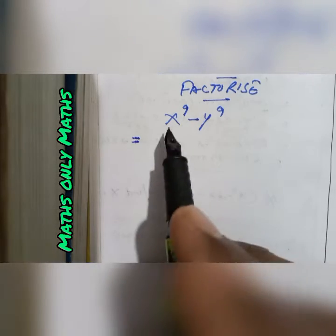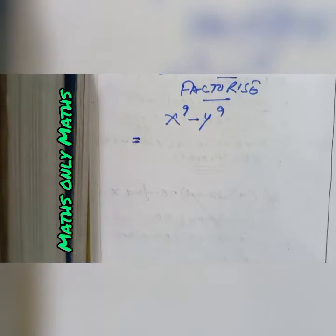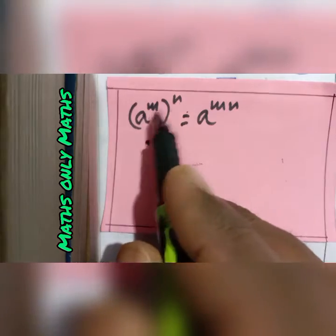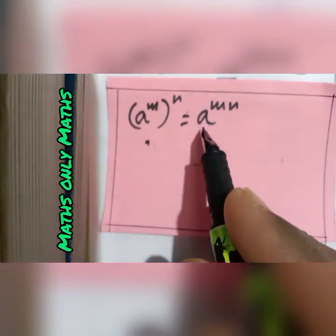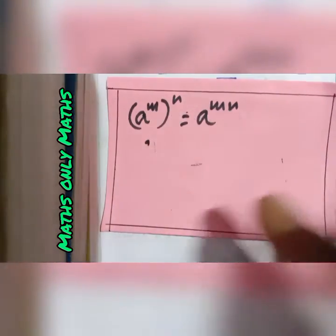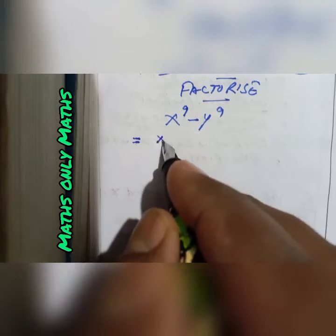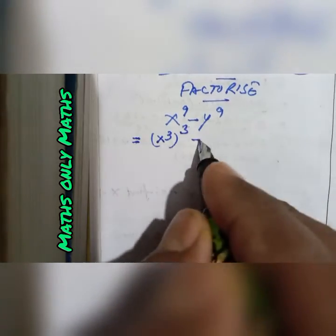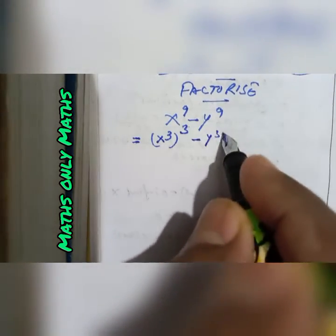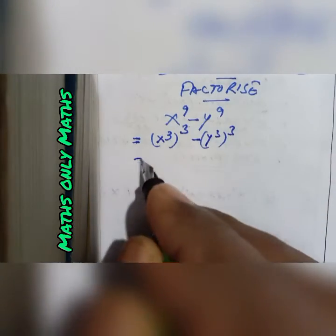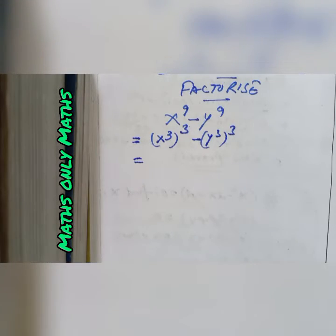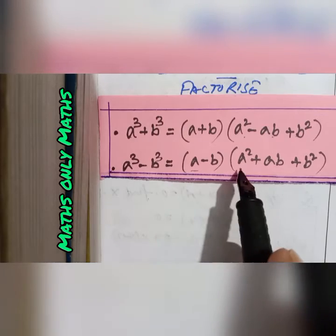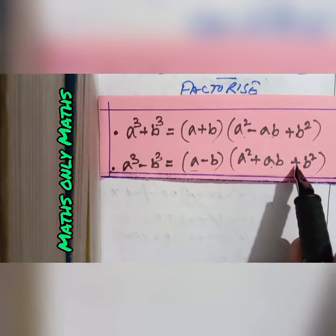Now factorize x to the power 9 minus y to the power 9. According to the laws of indices, a to the power m whole to the power n is a to the power mn. So I can write x⁹ as (x³)³ and y⁹ as (y³)³. The formula for a cube minus b cube is (a − b)(a² + ab + b²).